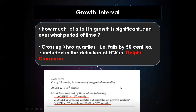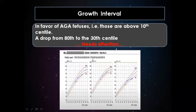Regarding growth interval — how much of a fall in growth is significant and over what period — crossing more than two quartiles, meaning a fall of 50th percentile, is included in the recent Delphi consensus definition of fetal growth restriction. This growth interval is applicable only for fetuses above the 10th percentile. A drop from the 80th to the 30th percentile means the fetus is facing problems and needs attention.